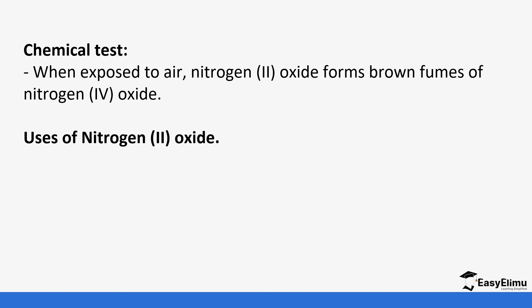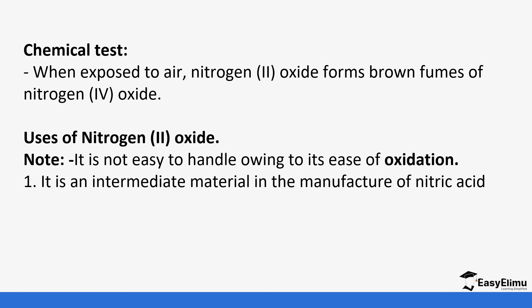Some of the uses of nitrogen (II) oxide: it is used as an intermediate in the manufacture of nitric acid. It's one of the compounds that is formed in production of nitric acid, so it's going to be an intermediate when we get to those large scale processes. It's not easy to handle owing to its ease of oxidation.